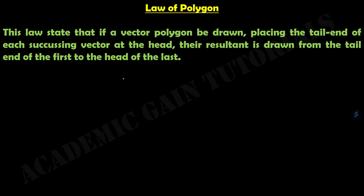In this video, we will discuss some basic parts of vectors. The first one is the law of polygon. This law states that if a vector polygon be drawn, placing the tail end of each succeeding vector at the head, their resultant is drawn from the tail end of the first to the head of the last one.